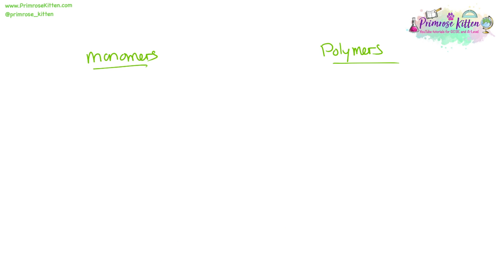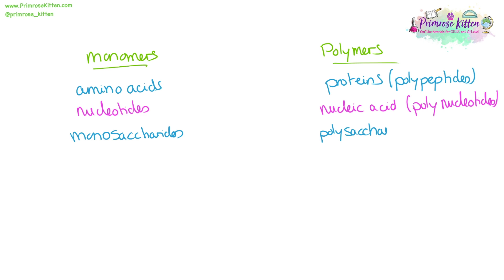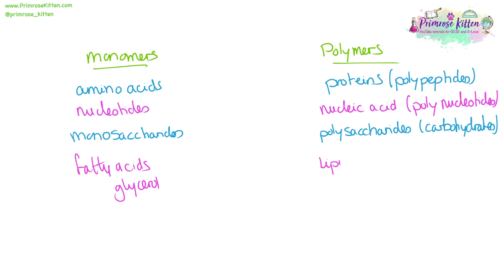You need to know what monomers go together to make which polymers. Lots of amino acids together in a chain will make a protein. Lots of nucleotides together will go together in a chain to make a polynucleotide or nucleic acid. Monosaccharides will polymerize into a polysaccharide. And together fatty acids and glycerol will form a polymer which is a lipid.